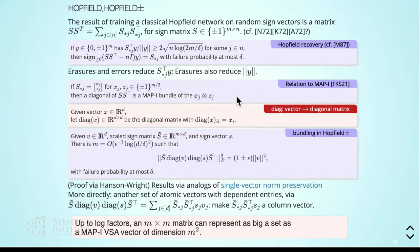There's a relation to MAP-I: if you split one column vector into two equal-size pieces and look at the Gramian, the diagonal of that Gramian is a bundle of bindings of those two pieces across the different columns. There's a direct relationship between Hopfield networks of this sort and MAP-I VSAs.